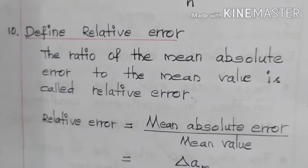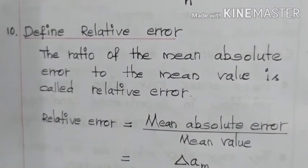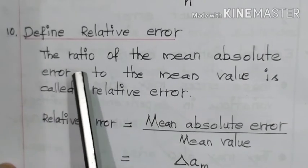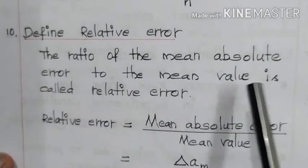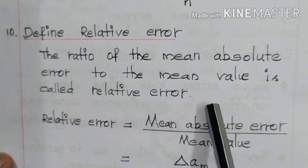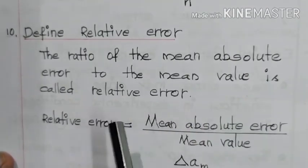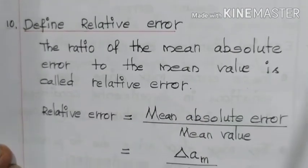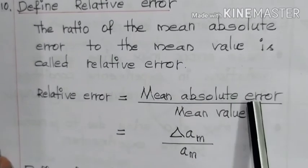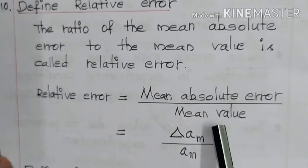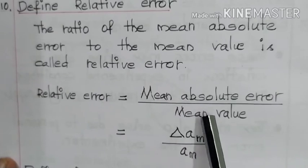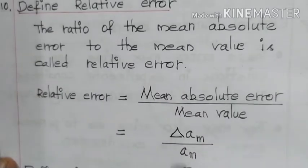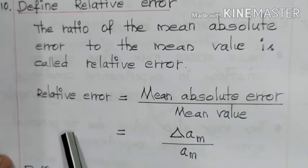Define relative error. The ratio of the mean absolute error to the mean value is called relative error. It is the ratio between mean absolute error and mean value. Here, delta AM represents mean absolute error and AM represents mean value. This expression gives the relative error.